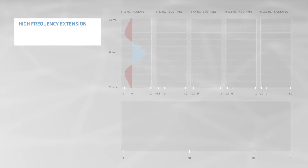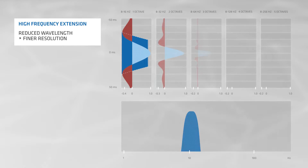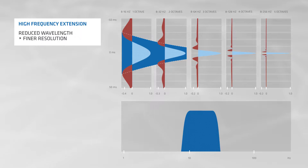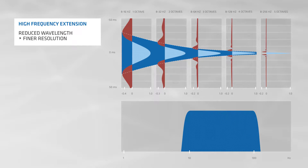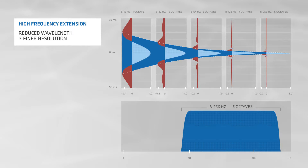Adding high-frequency information to the recorded seismic signal reduces the dominant wavelength, leading to finer vertical resolution of the associated seismic image.